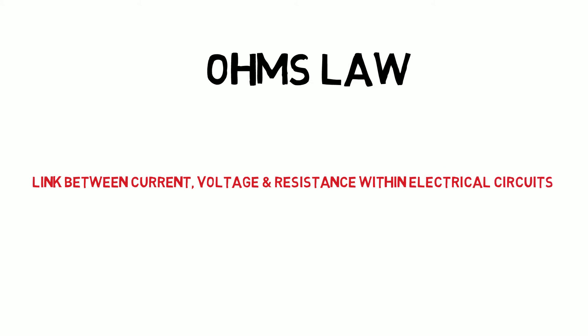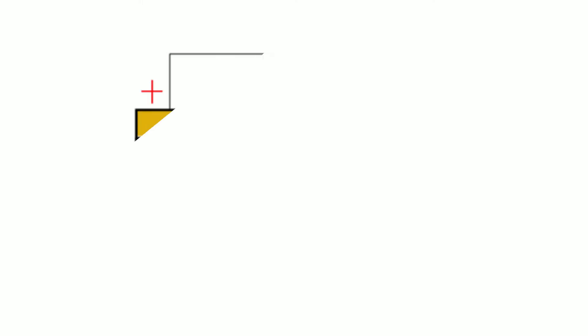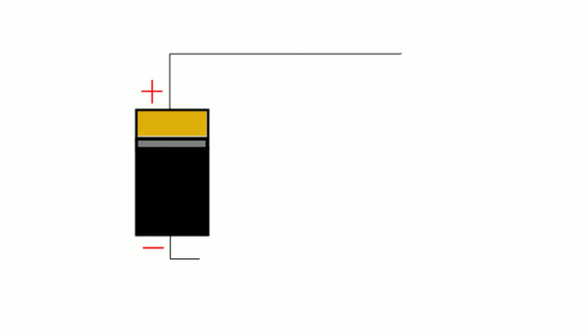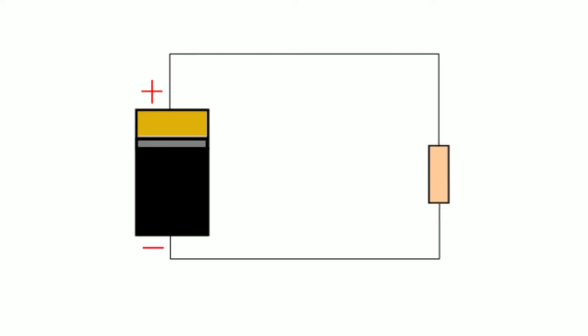If you aren't familiar with these concepts there's a useful analogy that makes it all very clear. Let's take a look at the most basic electrical circuit of a battery, some connecting wire and a resistor. The battery creates a potential difference of energy states or voltage that causes electrons to flow through the connected wire — the current — that then travels through the resistor and back to the battery.